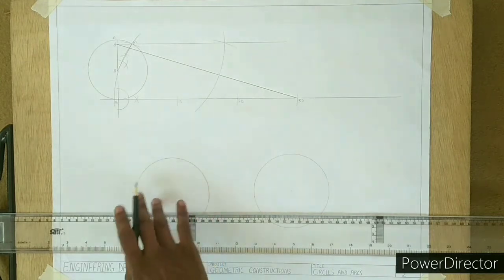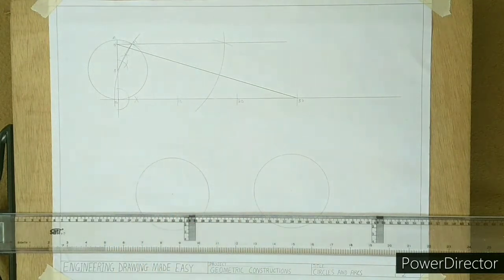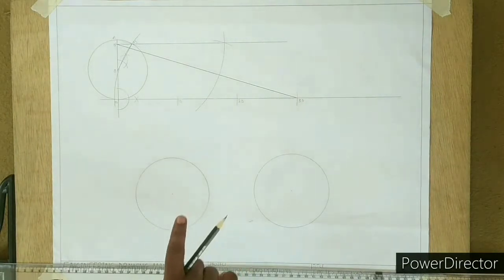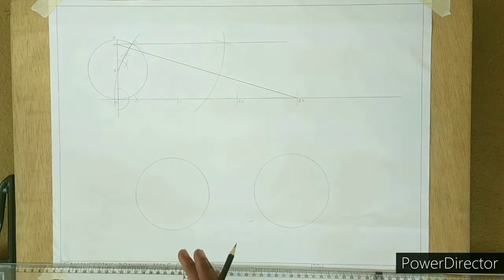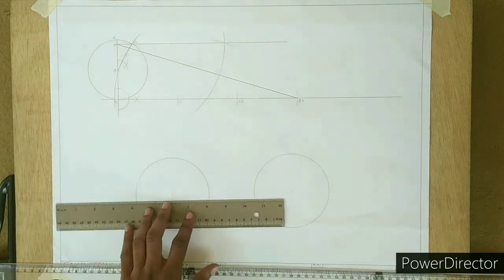Here we have our circle already drawn, and we are dividing the circumference into 5 equal parts. The first step is to draw the diameter of the circle and divide it into 5 equal parts, which is the number of parts we are going to divide the circumference into.